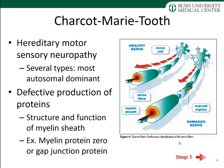Charcot-Marie-Tooth is a hereditary motor sensory neuropathy with several types caused by mutations in multiple genes. Most are inherited in an autosomal dominant fashion, and all result in defective production of proteins responsible for myelin sheath structure and function — for example, myelin protein zero and gap junction proteins. Problems with myelin destruction or scarring, as seen in Charcot-Marie-Tooth, result in abnormal nerve conduction, similar to myelin damage in the CNS.